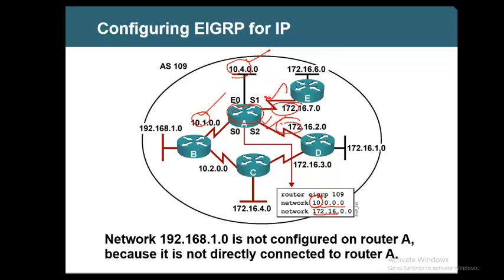So you don't need four lines — you can simply have two lines and specify exactly what to match. What you should not do is, on Router A, advertise the networks that belong to Router B. When you are in Router A, do not think about the networks of Router B. Whatever is on that router is what you need to advertise — you should not advertise other routers' networks.